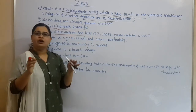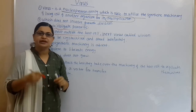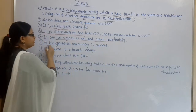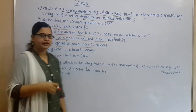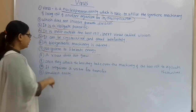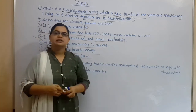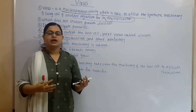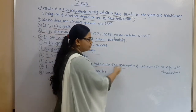A virus does not grow in the conventional sense — it increases by producing viral particles. Its genetic material identifies it. Once they attack the host, they take over the machinery of the host cell to replicate themselves.